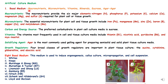The basal medium consists of macronutrients, micronutrients, vitamins, minerals, sucrose, and agar-agar. Macronutrients provide the six major elements: nitrogen, phosphorus, potassium, calcium, magnesium, and sulfur, which are required for plant cell and tissue growth. Micronutrients are also essential and include iron, manganese, zinc, boron, copper, and molybdenum.